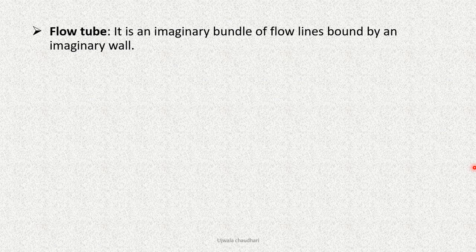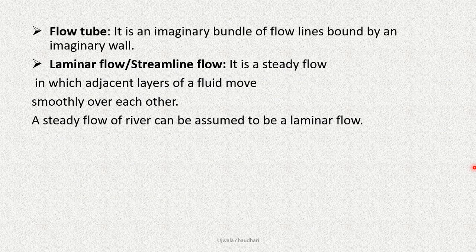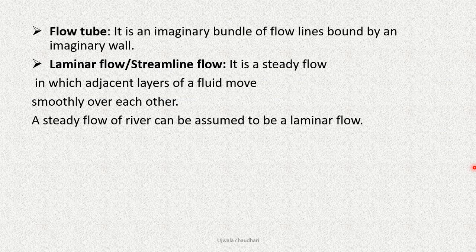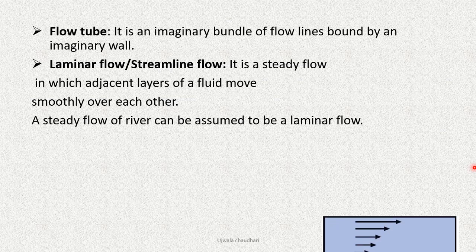Flow tube - it is an imaginary bundle of flow lines bounded by an imaginary wall. Laminar flow or streamline flow - it is a steady flow in which adjacent layers of the fluid move smoothly over each other. Steady flow of a river can be assumed to be a laminar flow.